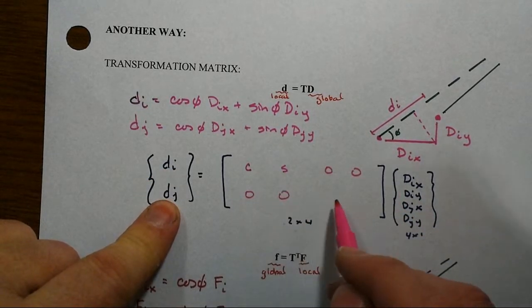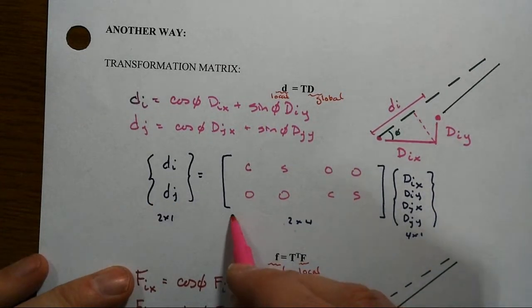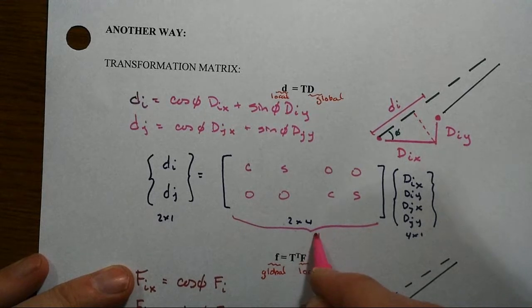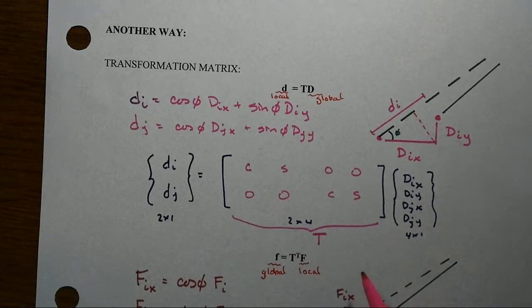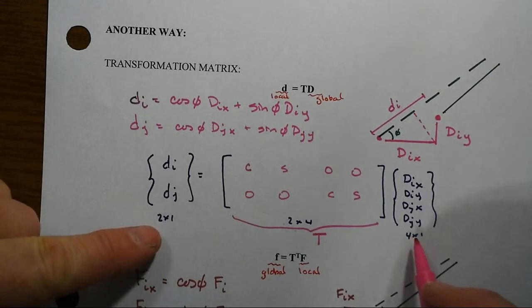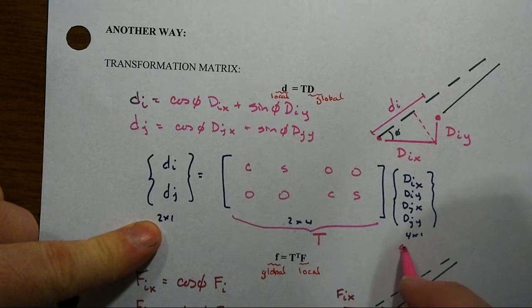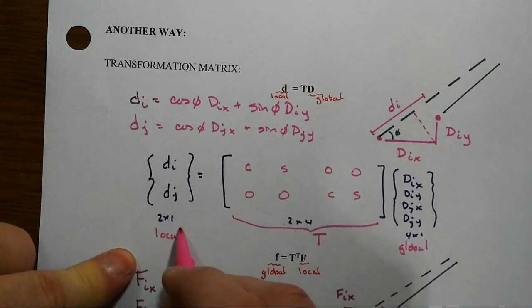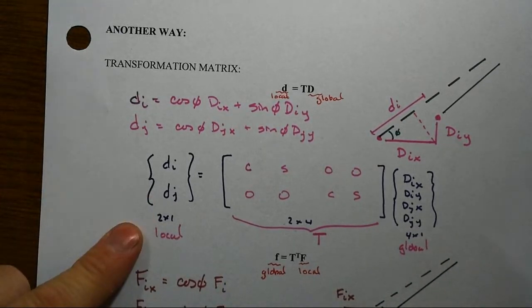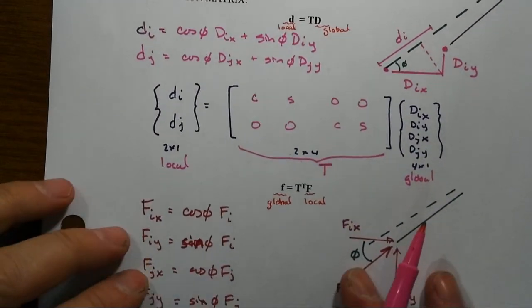Likewise here on the other one then we get 0, 0, a C and an S, and this thing right here, the 2 by 4, is this transformation matrix. It's the geometric or the deformation, or actually better is the displacement transformation matrix, transforming the global displacements to the local axial displacements. And so that's where we end up with this little simple expression D equals TD.